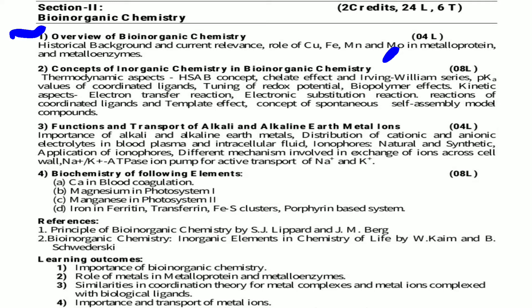These concepts cover the role of inorganic elements in bio inorganic chemistry, divided into thermodynamic and kinetic aspects. The third topic covers the function and transport of alkali and alkaline earth metal ions — specifically the distribution of cationic and anionic electrolytes in blood plasma and intracellular fluid, ionophores (natural and synthetic), their applications, different mechanisms involved in exchange of ions across the cell wall, and the sodium-potassium pump.